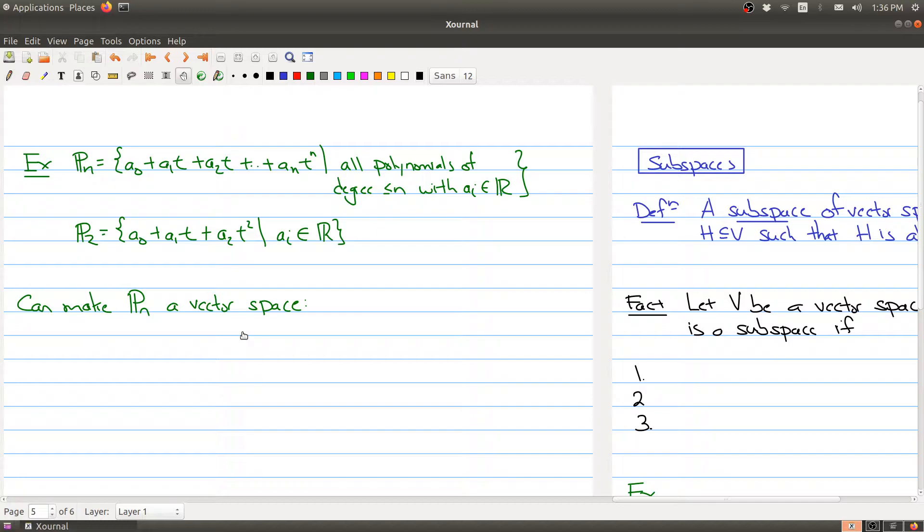Here is my notation for the set that I want to look at. P sub n, and what I have in P sub n are all the polynomials of degree less than or equal to n where the coefficients are coming from the real numbers. So as a specific example, P2 contains all the polynomials of degree 2 or less where the coefficients belong to the real numbers.